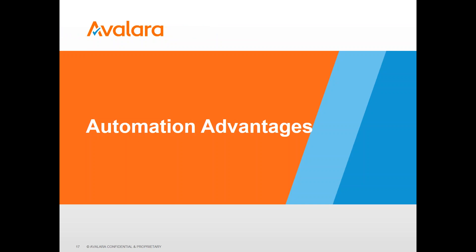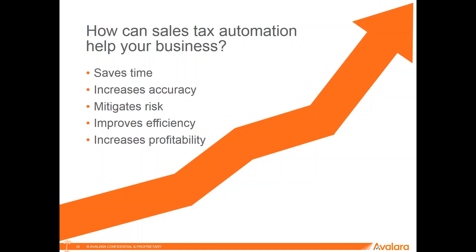The advantages to automation: why is it important to start thinking about automation? Automating your sales tax can help you save time, increase your accuracy, mitigate your risk, and improve your efficiency and increase profitability. The increased profitability piece is really huge. You want to think about what is your exposure and what is your risk if you were to have an audit. Because if you do find that you have missed some taxes, you don't get to go back and collect those from your customers — that is really coming off of your bottom line if you have to get assessed sales tax fines and penalties.